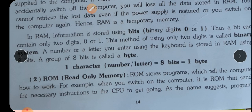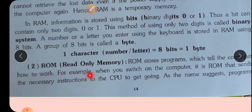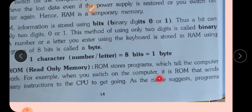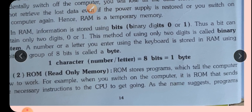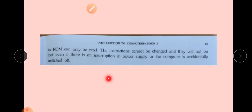The exact answer comes to RAM, but it is different in binary addressing which we don't even know. For example, when you switch on the computer, ROM sends the necessary instructions to the CPU to get going. As the name suggests, the program in ROM can only be read — the instructions cannot be changed and will not be lost, even if there is an interruption in power supply or the computer is accidentally switched off. ROM's information does not go away even when the power cuts.